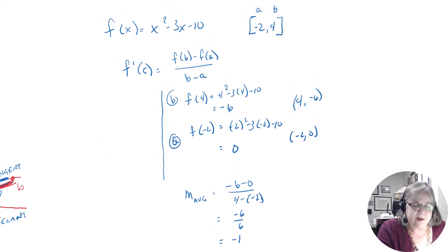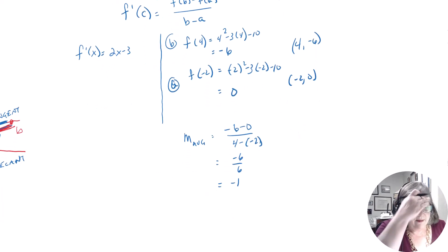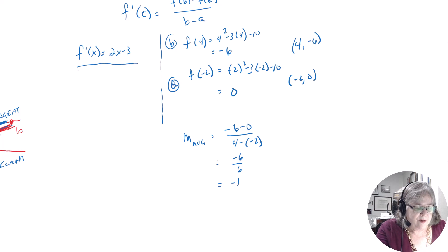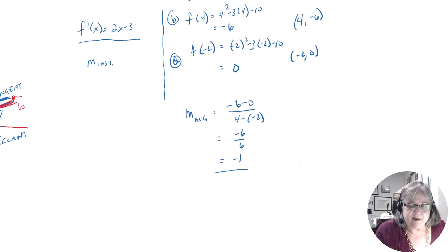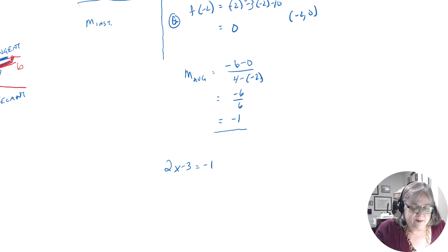On the other side, we calculate the derivative. f prime of x is 2x minus 3. The derivative — this f prime of x equal to 2x minus 3 — has to be equal to this slope, because this is the instantaneous slope and this is the average. So what I want to find is where 2x minus 3 equals negative 1. That gives 2x equals 2, so x equals 1. This is my value c.